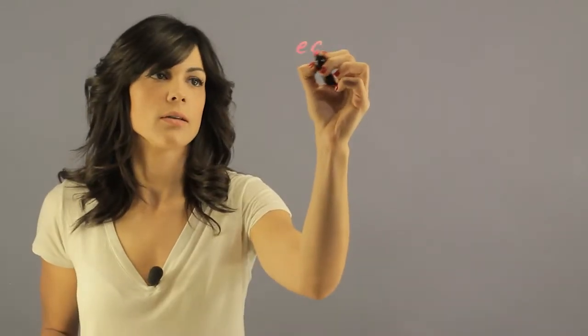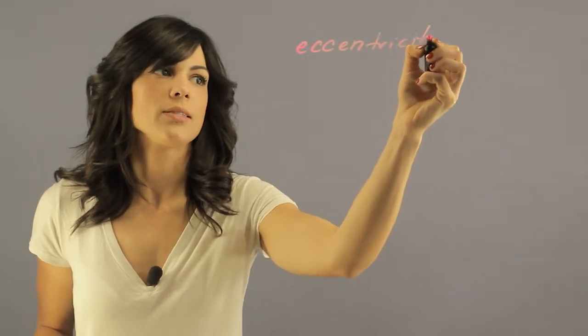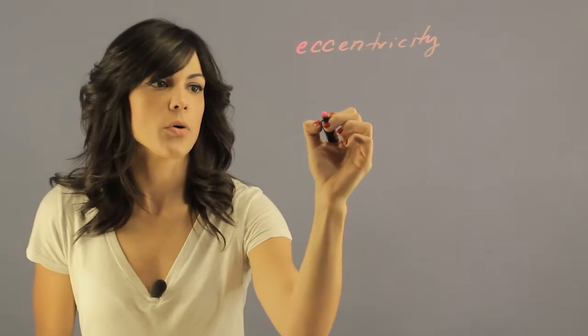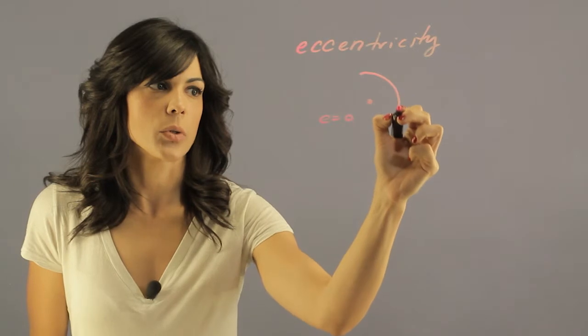The first thing I want to talk about is the eccentricity of an orbit. The eccentricity of an orbit is a measurement of how far it is from a perfect circle. If e is equal to zero, you have a circular orbit.